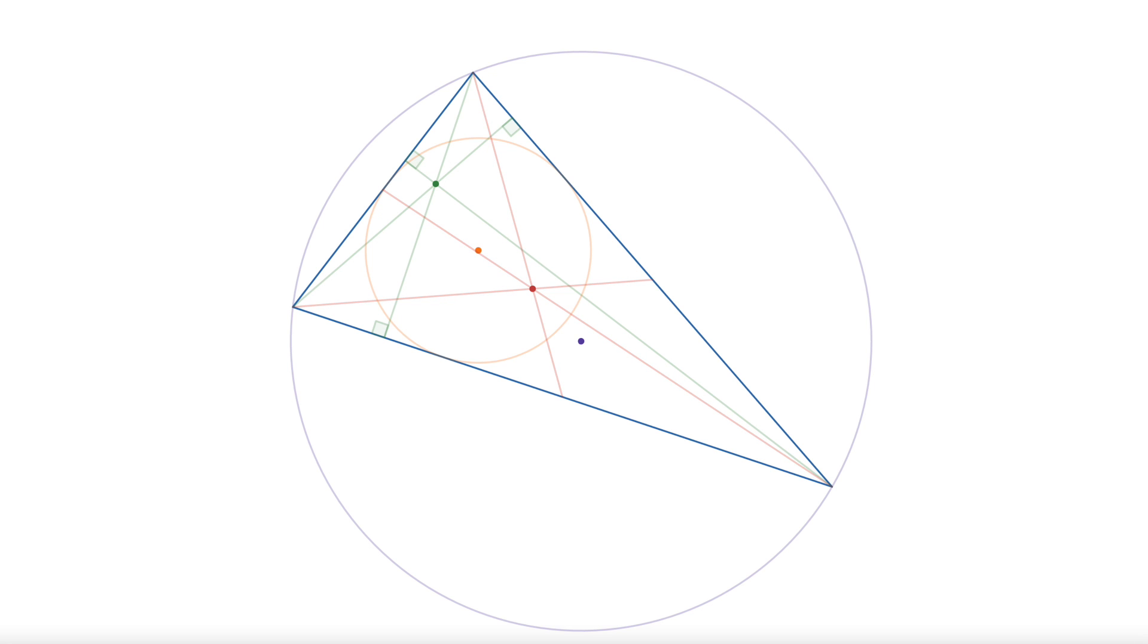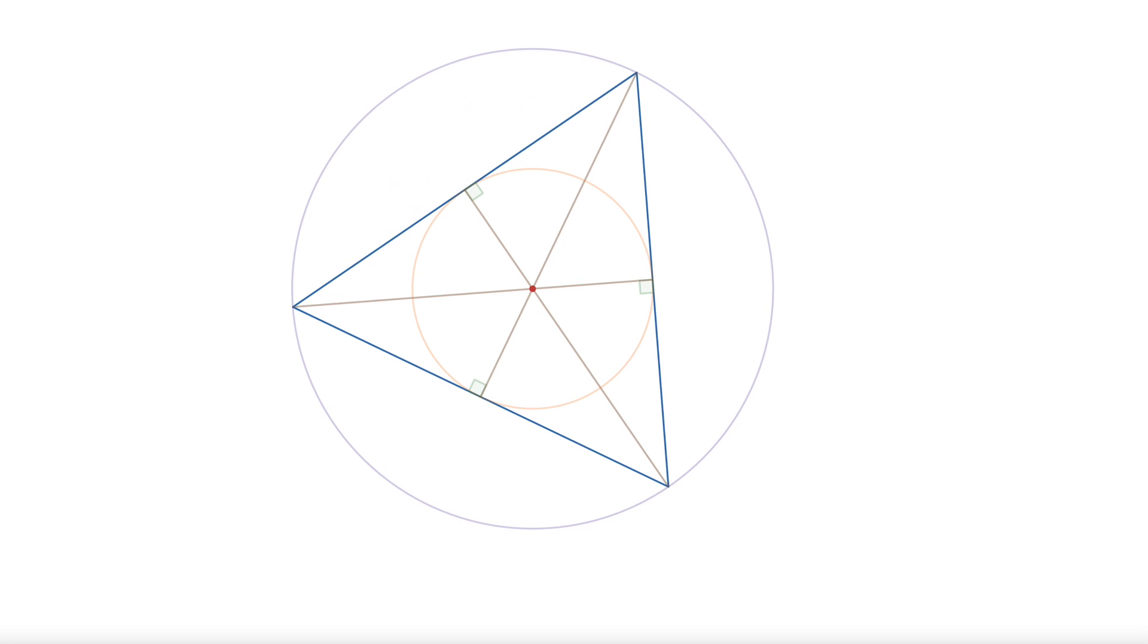Fortunately, for an equilateral triangle, these are all the same point. So we can choose whichever definition is the easiest to work with, which is the centroid.